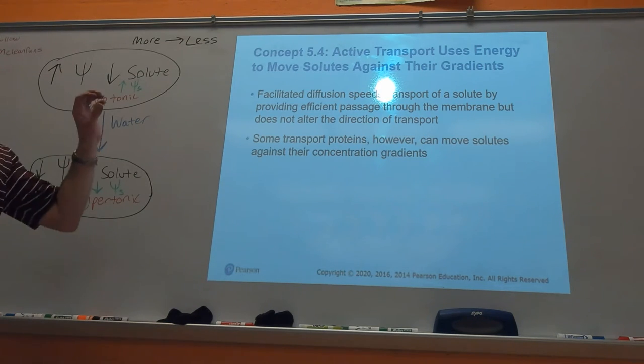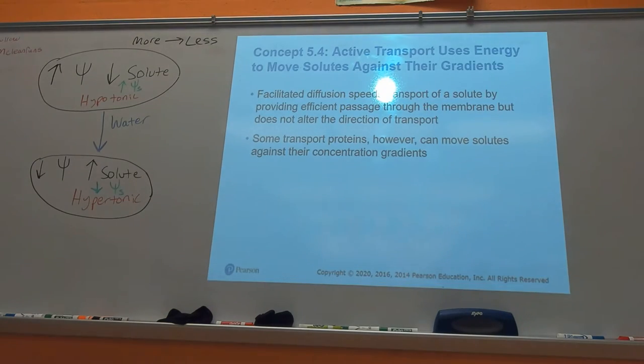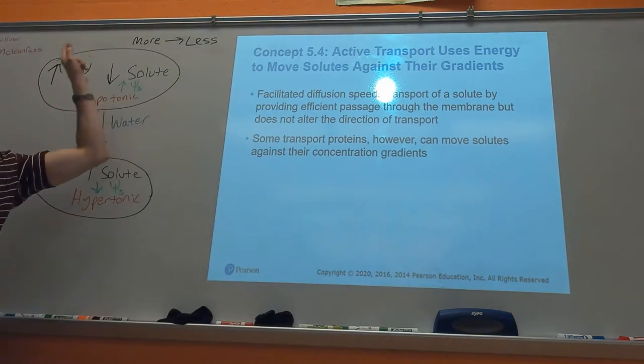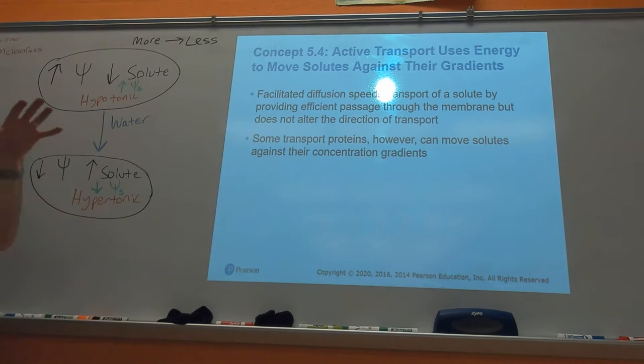Okay, so active transport. Normal diffusion, you go from more to less. Active transport, you're doing the opposite. You're going from less to more. You're going against your concentration gradient, against what nature would want to happen.